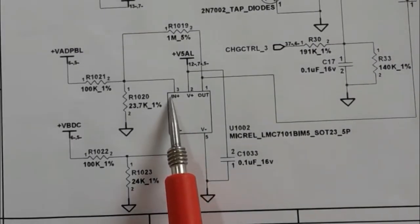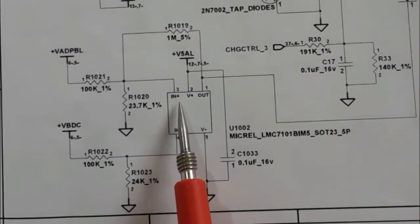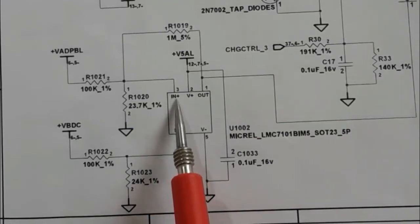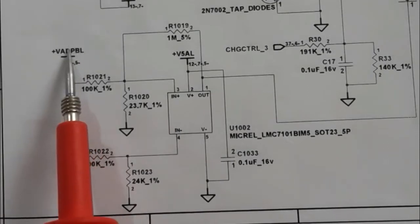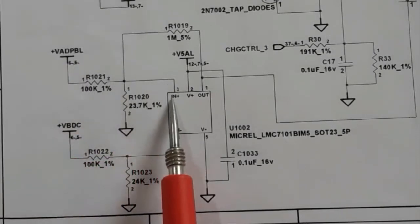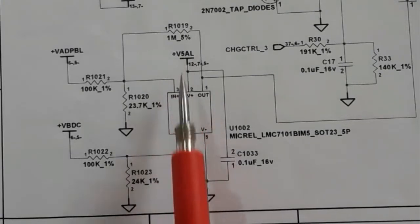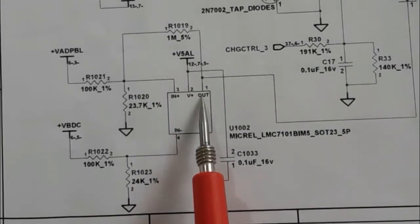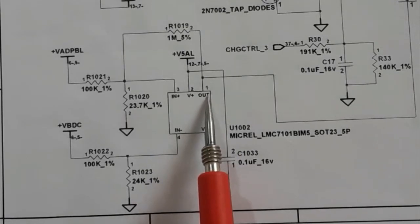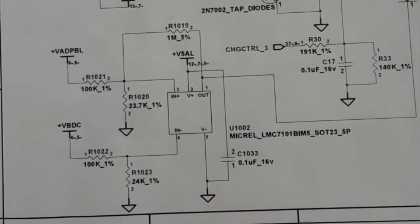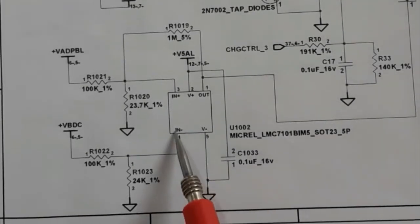In the schematic, this is the input voltage — it can be 19V from the adapter. This is the V-plus, the working voltage of 5V for the IC. Here we have the output voltage, which is usually less than the input voltage. And here we have the ground, V-minus.